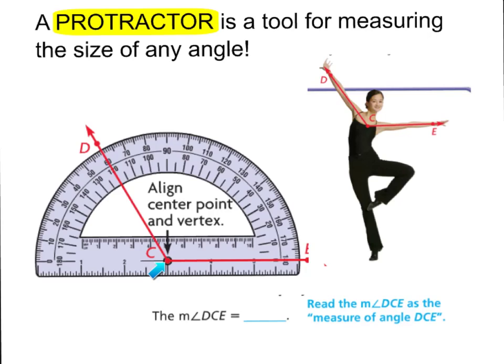Now first of all I'm going to guess that this has to be obtuse because if I look at it I know it's greater than a 90 degree angle. See how it's greater? Therefore I know it's going to be an obtuse angle. So I'm going to start right here where I see my zero and I'm just going to start counting up. 10, 20, 30, 40, 50, 60, 70, 80, 90. There's my right angle. 100, 110, 120. That answer does make sense. I'm going to say the measure of angle DCE is 120. And that's how I would read this. The measure of angle DCE is 120 degrees.